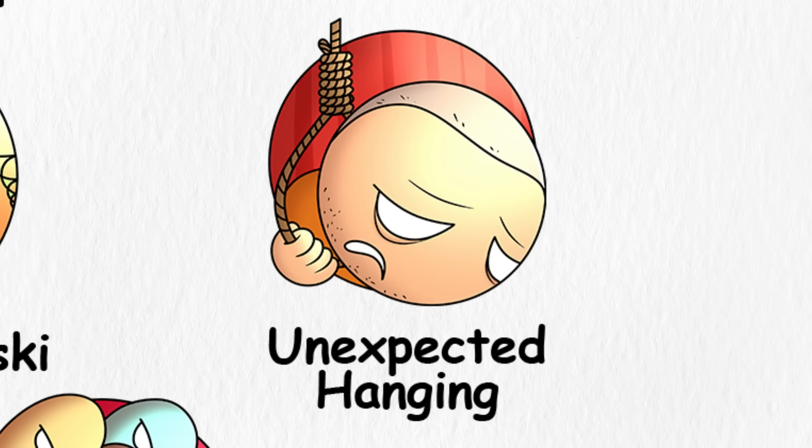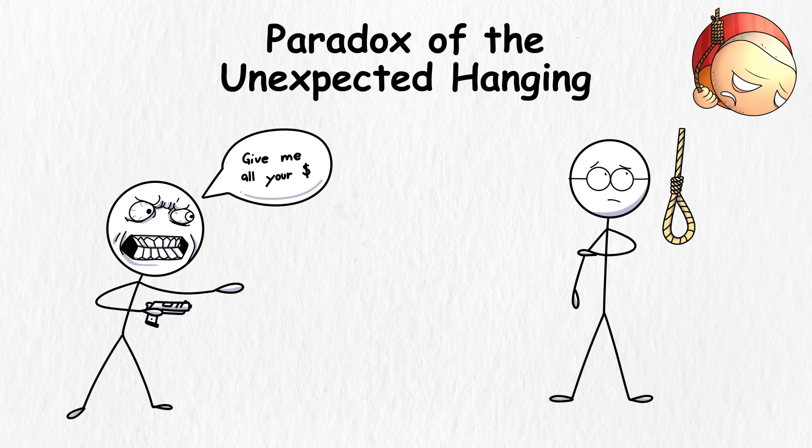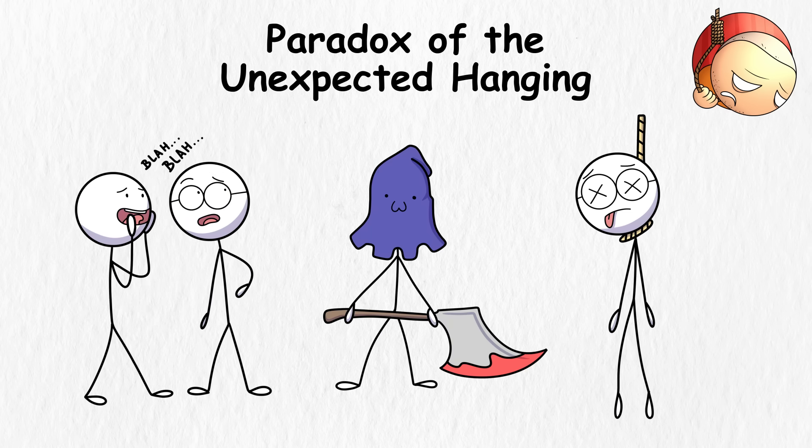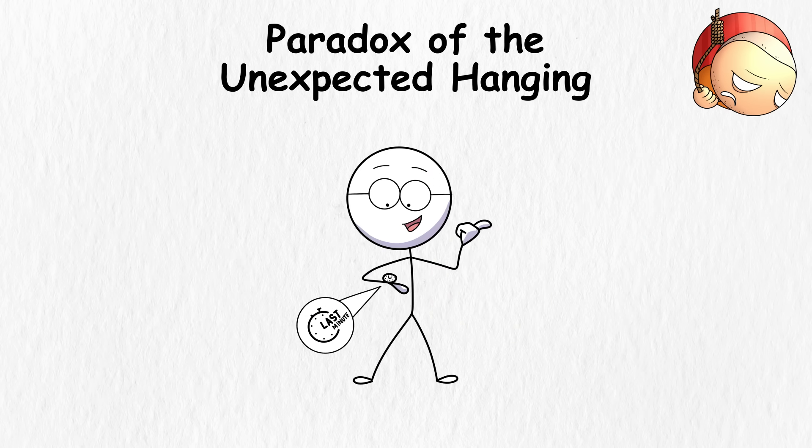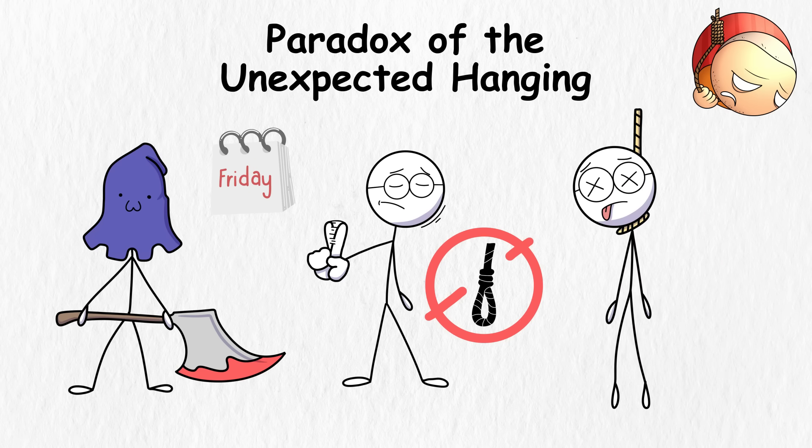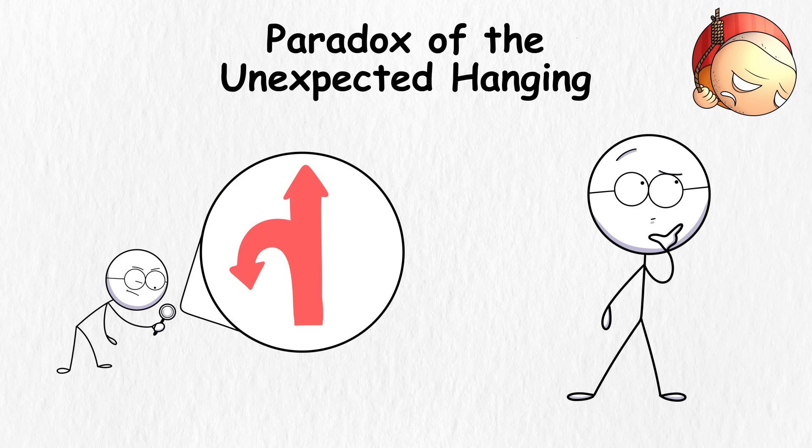Paradox of the Unexpected Hanging. Let's say that you're a criminal about to get hanged for your misdeeds. Your executioner is a bit mischievous and tells you that you'll be hanged on a surprise day of the week, but you won't know when until the last minute. But you tell the executioner that you can't be hanged on a weekday because if you haven't been hanged by Thursday night, Friday would be too predictable, making the surprise execution not so surprising anymore.